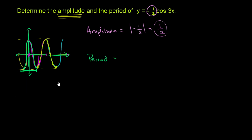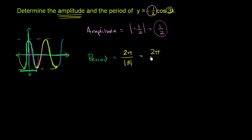Given that, what is the period of this function right over here? To figure out the period, we just take 2π and divide it by the absolute value of the coefficient right over here. So we divide it by the absolute value of 3, which is just 3, so we get 2π over 3.